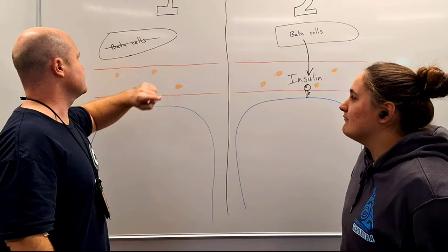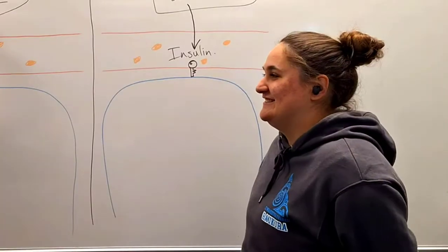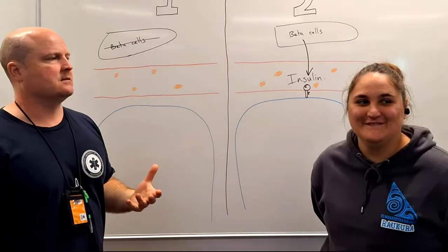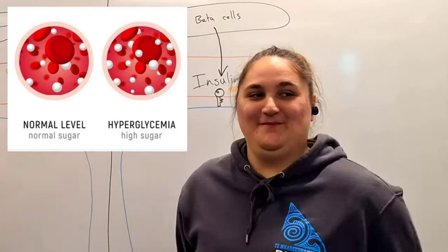So these beta cells, they get destroyed. What is their job normally? To release insulin. And when do they release insulin? When our blood glucose levels are high.